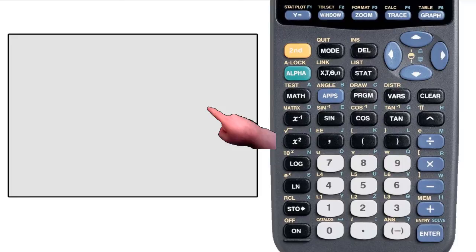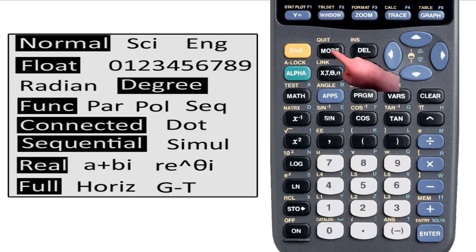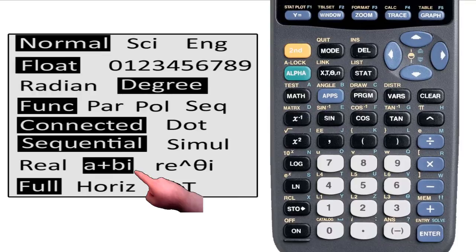The first thing that you need to do is change your settings to complex mode. You do this by hitting mode, and then going to the second to last row, and changing the value from real to A plus BI. This is the rectangular complex mode.